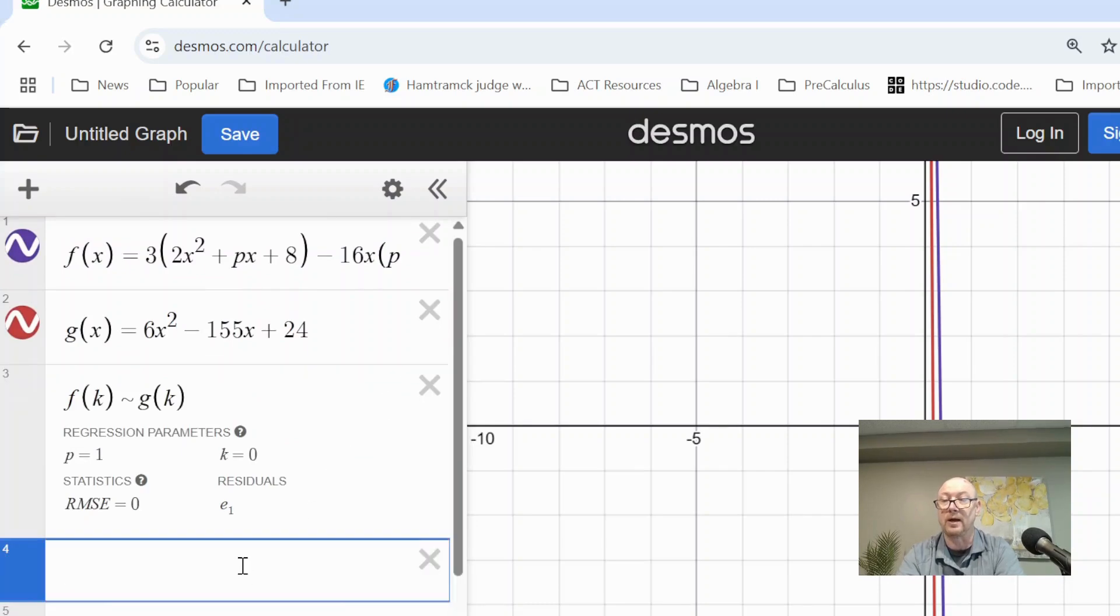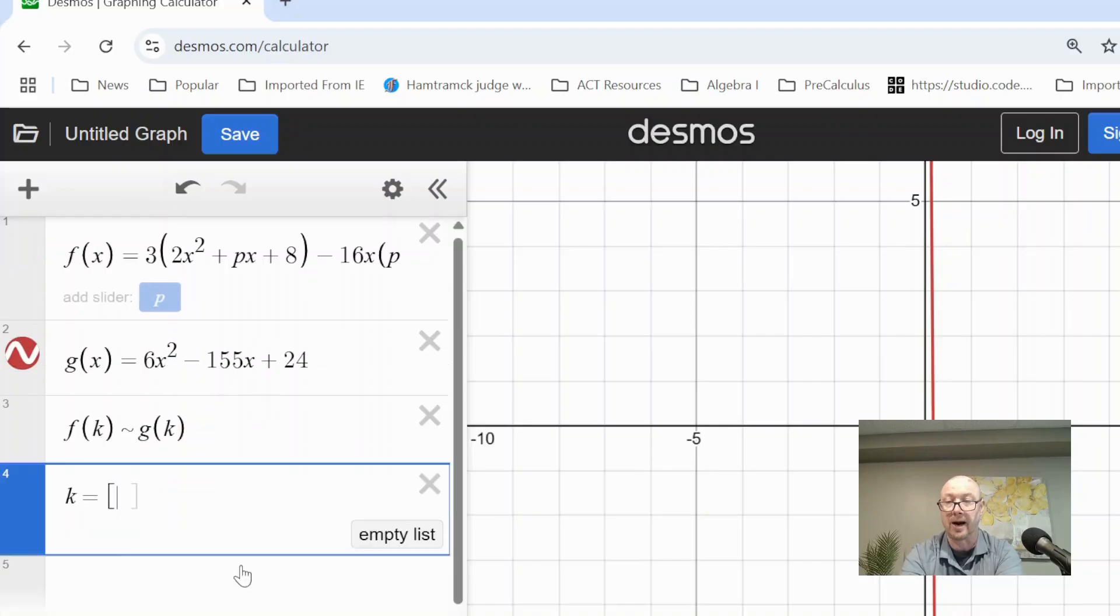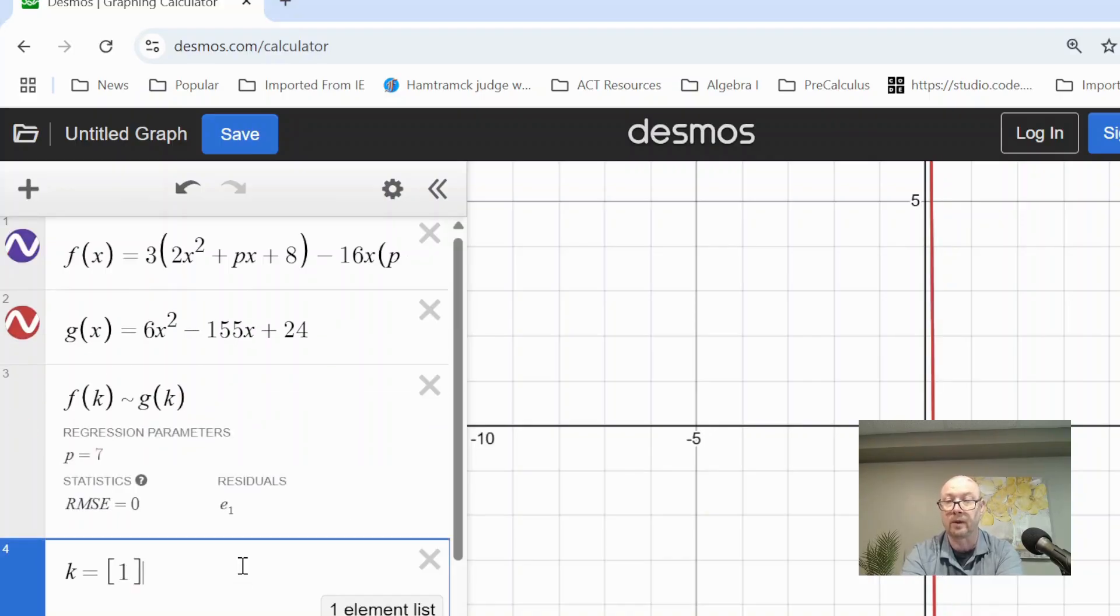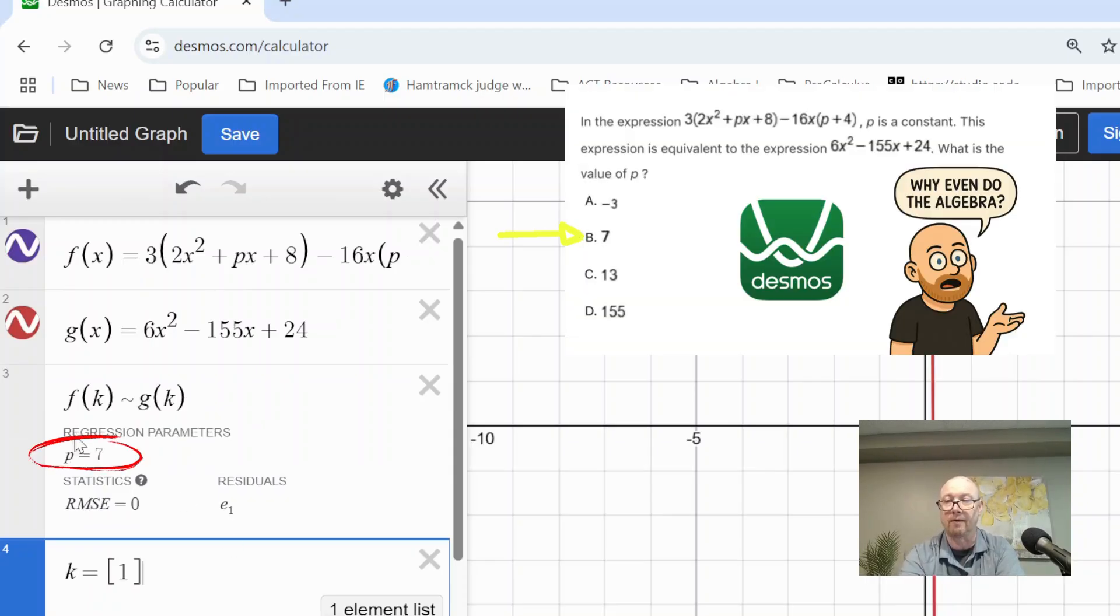Then we go down to here, and we can give k any value that we want in set notation. So we just say k equals, and then put brackets. You can put whatever number you want. So I'm going to put in 1, and look what we have. We have our answer, p equals 7.